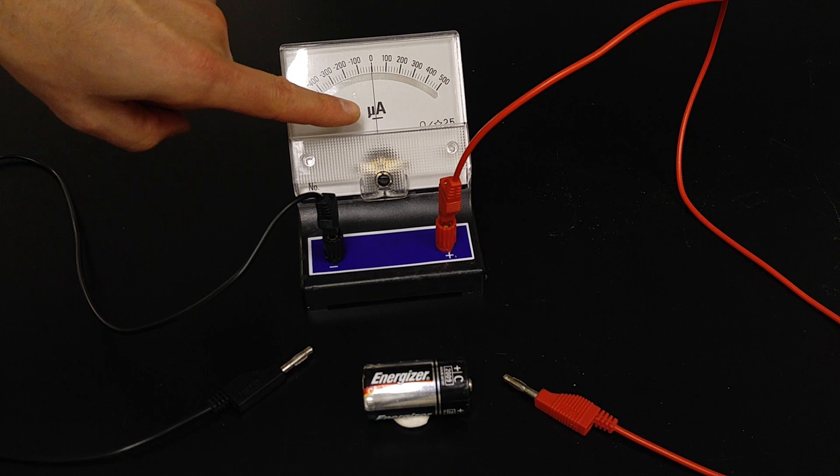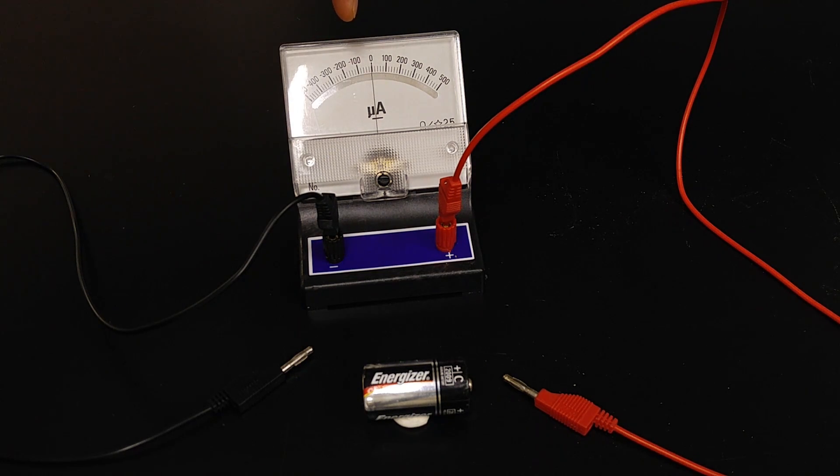You can see that this measures things, the numbers represent microamps, or millionths of amps, and the needle can swing to the right or to the left, so it can measure current in particular directions.